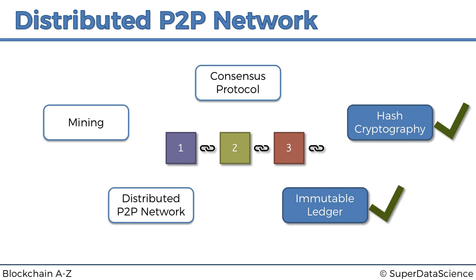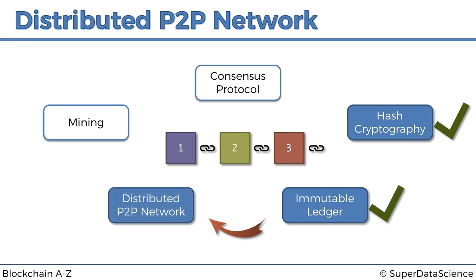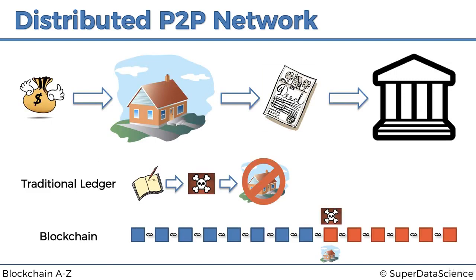We've checked off immutable ledger previously as well, and now we're moving on to distributed P2P networks. We left off last time when we discussed the example of property ledgers — the traditional approach versus the blockchain approach — and how the blockchain can add more protection and make the whole ledger immutable.